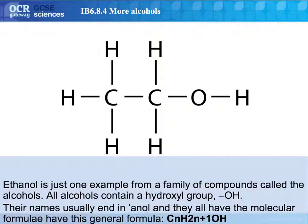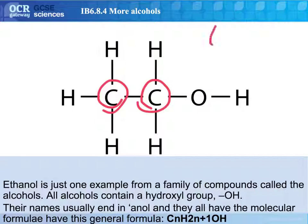Here is an alcohol — this is ethanol. We know it's ethanol because it has two carbons, giving it the prefix 'eth'. The bit that makes it an alcohol is this section here — this is the OH group. It doesn't matter where that OH group is; it's still an alcohol.